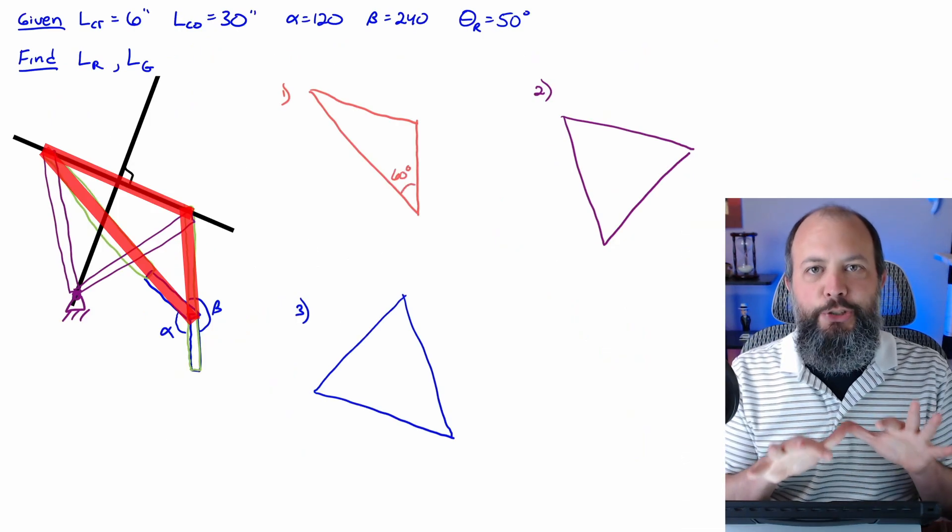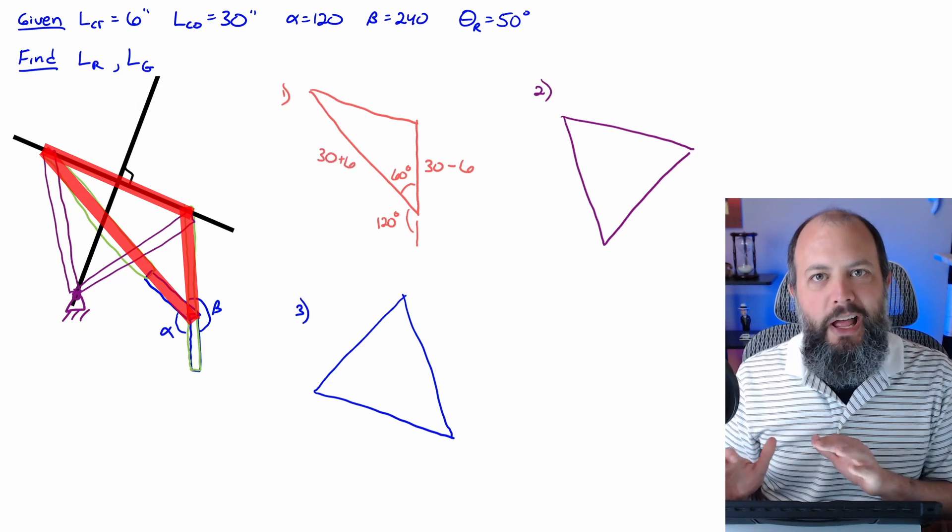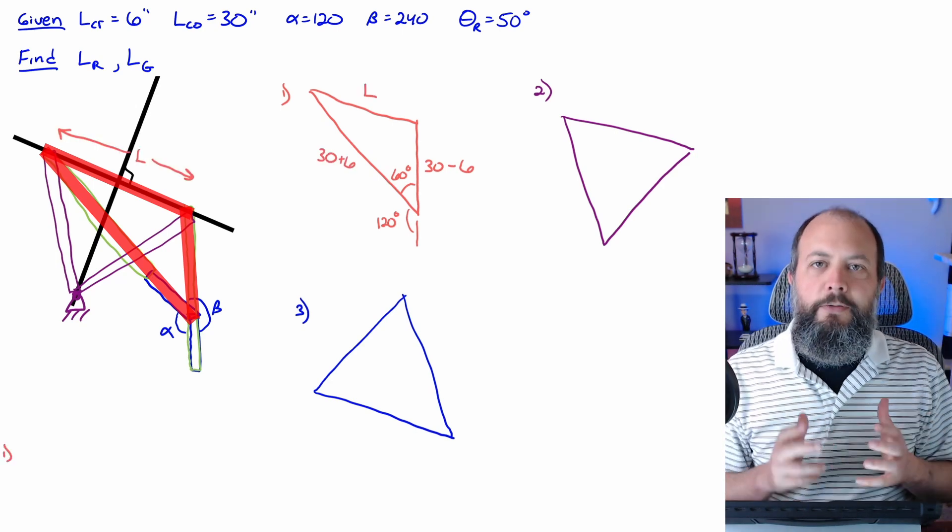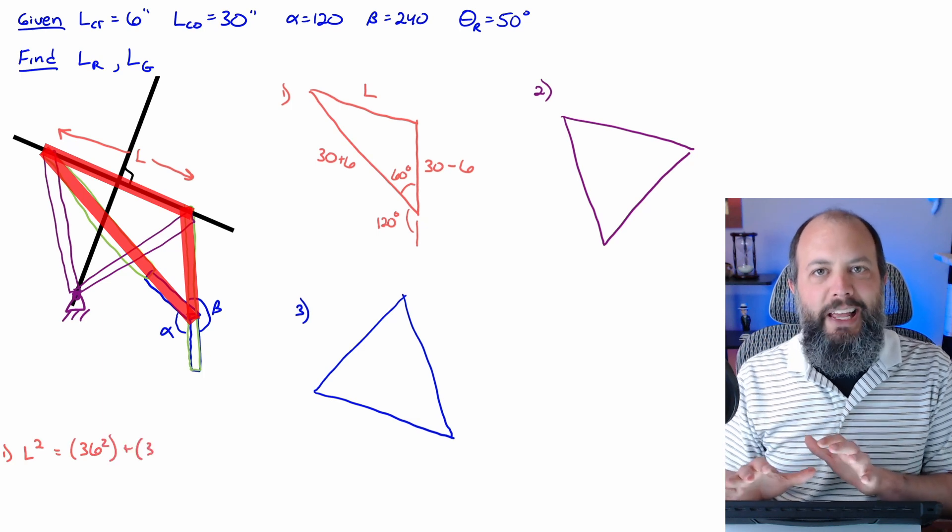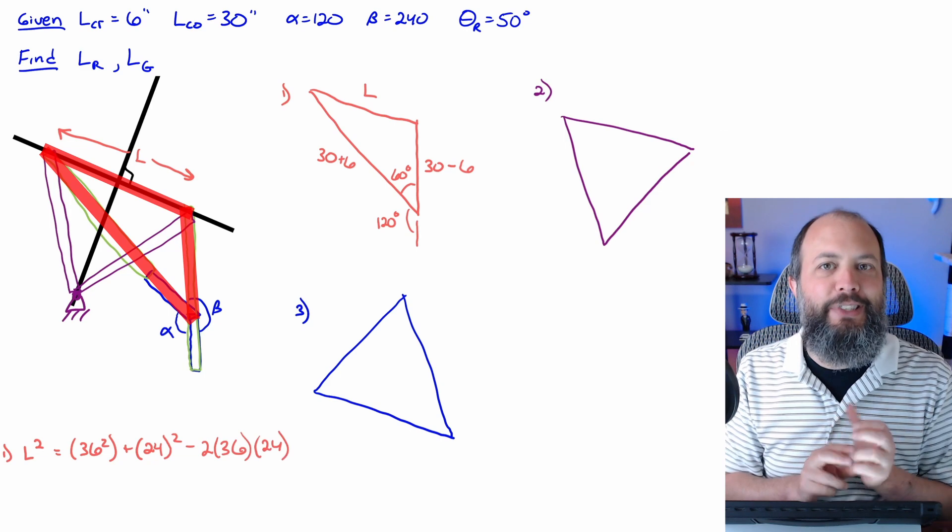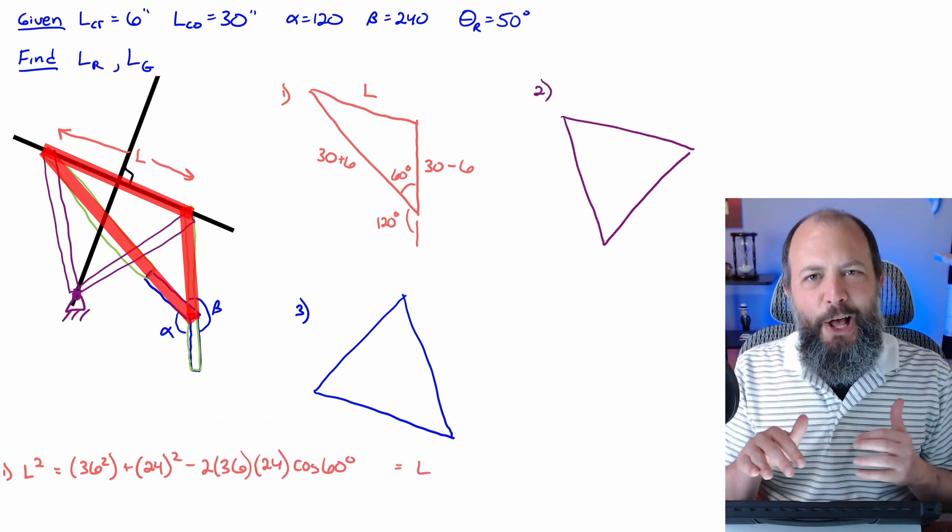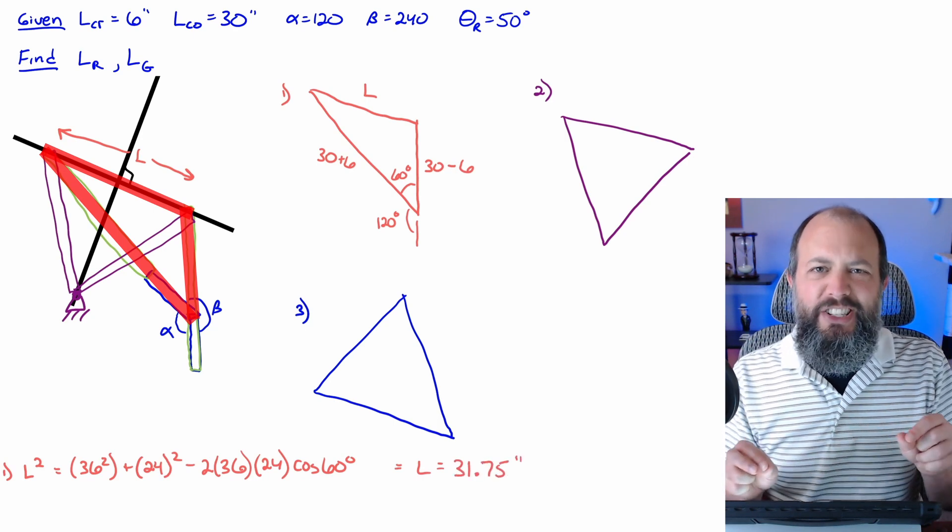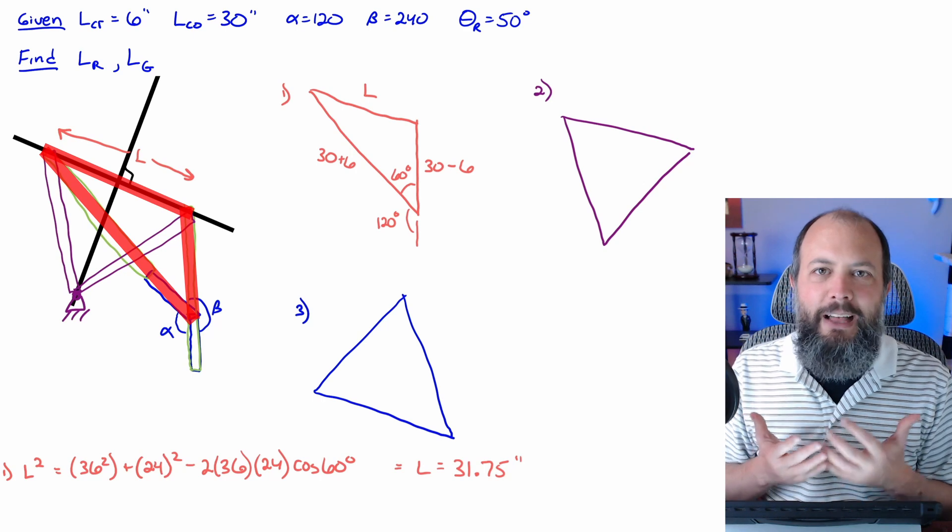Because the drawing is getting too crowded, in order to actually start to solve this numerically, draw yourself three separate triangles over on the side. This first red triangle has sides based on the coupler and crank lengths. And I can use that 120 degree alpha angle to get this interior angle of 60 degrees. Using then a law of cosines, I can get this value for L, which is the separation distance between the two coupler end positions of 31.75 inches.